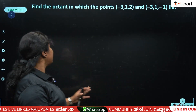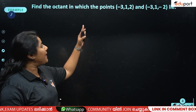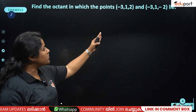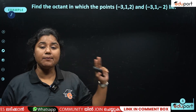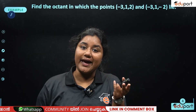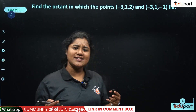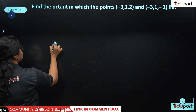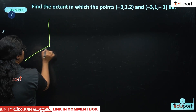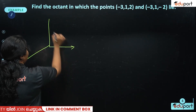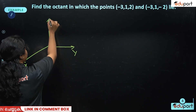The next question: find the octant into which the point (-3, 1, 2) and (-1, -2, ?) fall. What is an octant? We have x, y, and z axes. Think of it like looking at the corner of a room — this is the z-axis, this is the y-axis, and this is the x-axis.